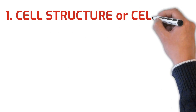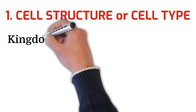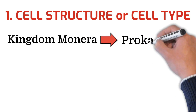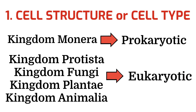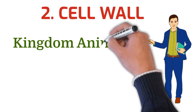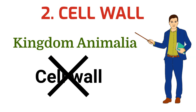First, the cell structure or cell type. Only Kingdom Monera among all the five is prokaryotic; the others are eukaryotic. Second, the cell wall. Only in Kingdom Animalia is the cell wall absent; the other four kingdoms possess a cell wall.